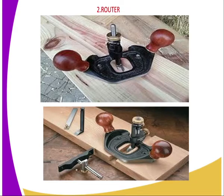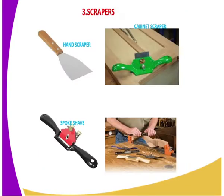Then we have the router. The router is the second tool and equipment, which is normally used when it comes to smoothing — whenever you want to put a groove or to smoothen a groove on a certain piece of work on a wooden surface. Then we have the third type: we have the scrapers, and we have several types.